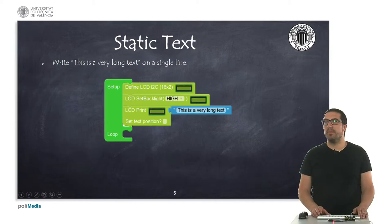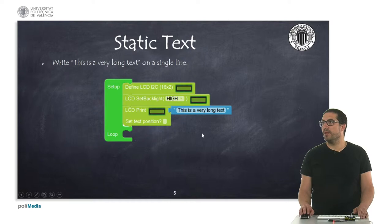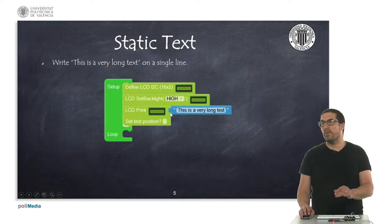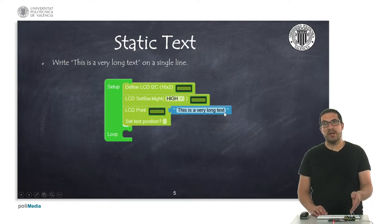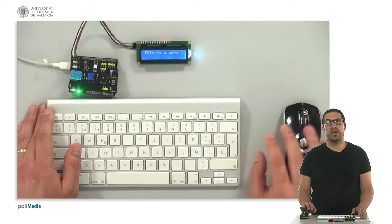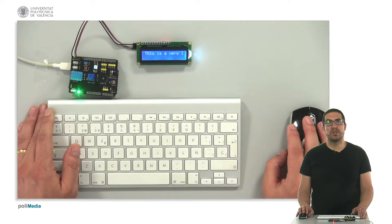In this first example, we're going to see how to print a text on the LCD screen with one single line. I have already uploaded the code onto the board, so let's switch to the overhead camera to see how it works.